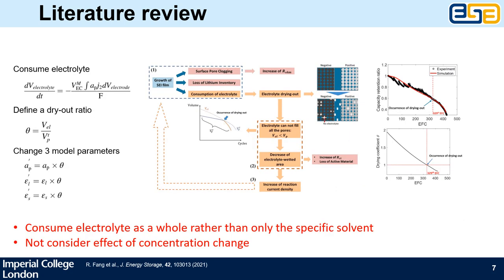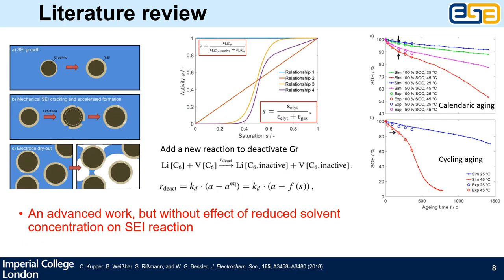In the second work, a dry-out ratio is introduced, defined as electrolyte volume over the pore volume inside the electrode. This ratio is added to three parameters: the specific surface area, the electrolyte volume fraction, and the active material volume fraction. They capture a positive feedback loop, as shown by the dashed arrow here. However, they have ignored the fact that the solvent concentration would change, which may induce a negative feedback loop.